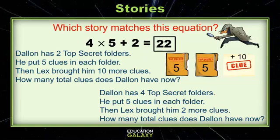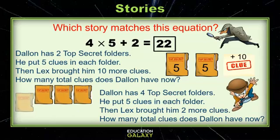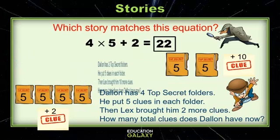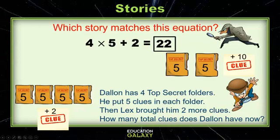Let's look at the second one. Dallin has four top secret folders. He puts five clues in each folder. Then Lex brought him two more clues. How many total clues does Dallin have now? Look at our picture there. Does that match our equation? Which one do you think is the answer? Use your clues to help you. Good job — if you guessed the second one, you are correct. 5 times 4 equals 20, plus my two clues gives me 22. Good job, detectives. You are ready to go out and try it on your own.